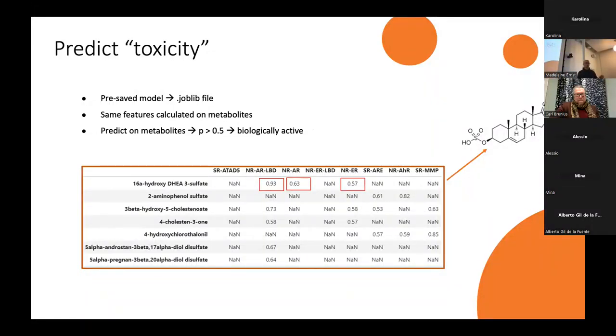And now I apply these 12 models on the metabolites. I have these pre-saved models. I calculate the same features. I need the same features: molecular descriptors and fingerprints. And I run it on the metabolites. This is just a chunk of the table. I have my biological targets, the stress response and nuclear receptors. And I see for some of the metabolites, I get the probability of the molecule being biologically active against the target, which we consider as being toxic because it's an important biological process.